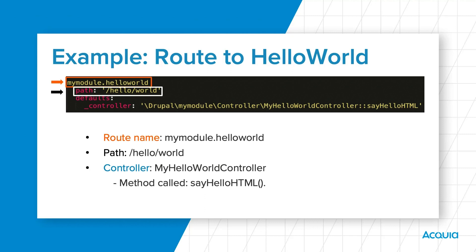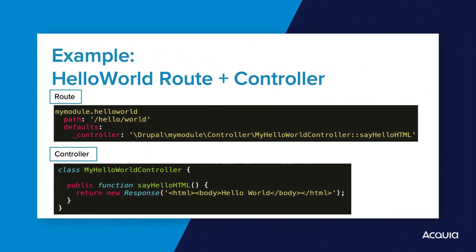The last piece to point out is the controller element of the route — this route knows to execute the sayHelloHTML method of the myHelloWorldController class. Putting this all together, routing and controllers work together to deliver a response based upon a request. It's important to remember that routes and controllers are components of Symfony and by extension components of Drupal. As we go through this module development course, we will encounter other exciting and powerful components of the Drupal-Symfony collaboration.